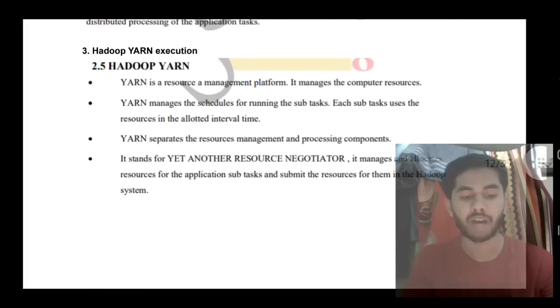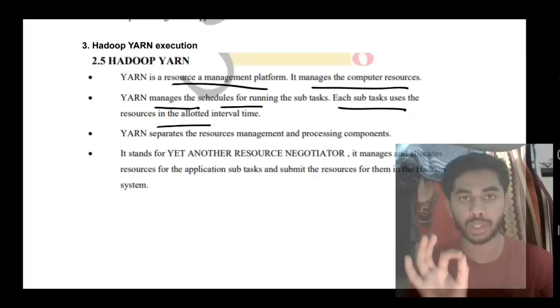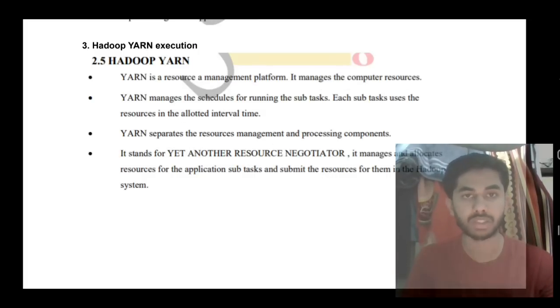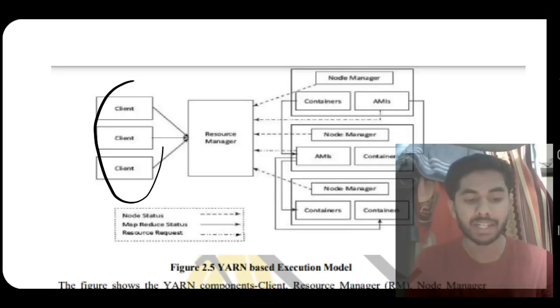The third super important question is Hadoop YARN execution. YARN is a management platform, a resource management platform. It manages computer resources and schedules for running sub-tasks. Each sub-task uses resources in the allocated time interval. It separates resource management and processing components. Its full form is Yet Another Resource Negotiator. It manages and handles resources and allocates what time which process should be running.